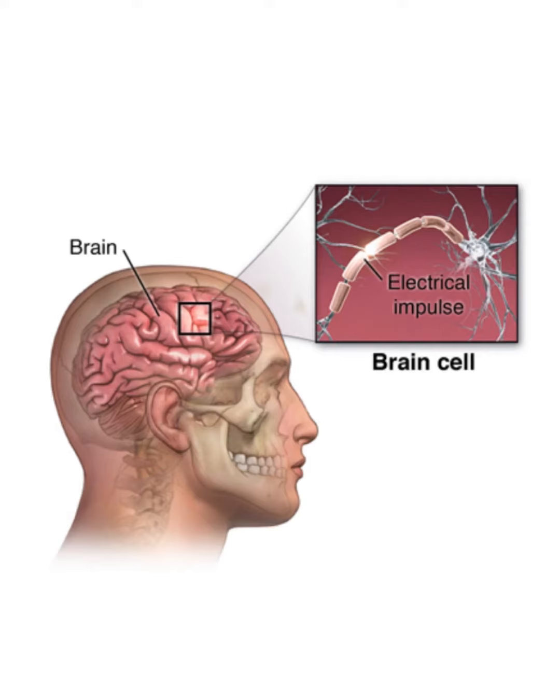Seizures, also known as convulsions, occur when the brain activity is interrupted. They can result from head injuries, strokes, infections, poisoning, and brain tumours.